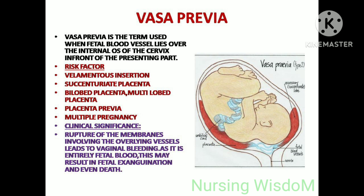Vasa previa is the term used when fetal blood vessels lie over the internal os of the cervix in front of the presenting part. Risk factors include velamentous insertion, succenturiate placenta, bi-lobe placenta, multi-lobe placenta, placenta previa, and multiple pregnancy. Clinical significance: rupture of membranes involving the overlying vessels leads to vaginal bleeding. As it is entirely fetal blood, this may result in fetal exsanguination and even death.